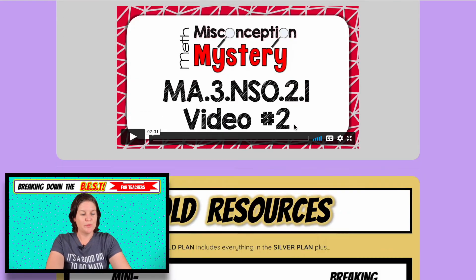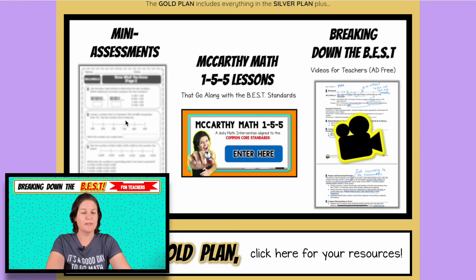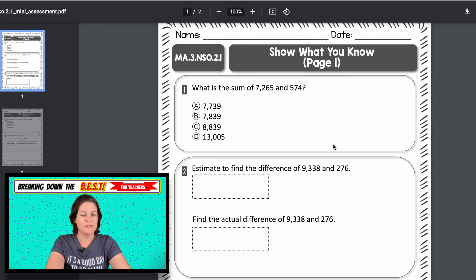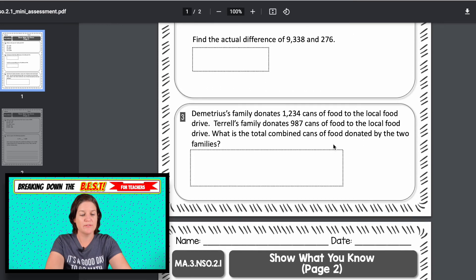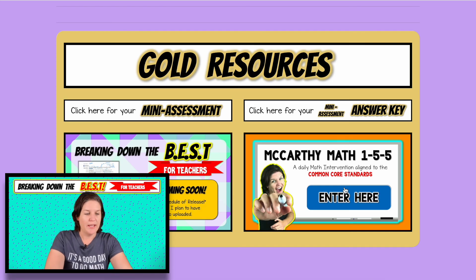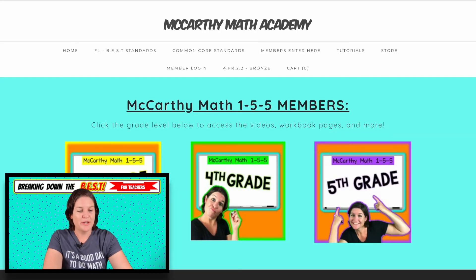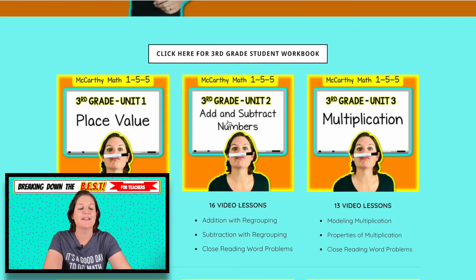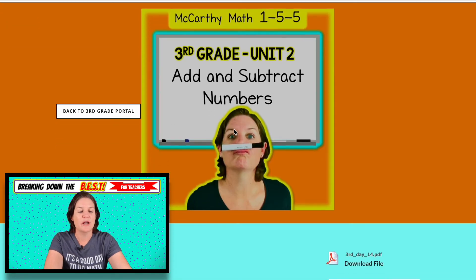All right. And if you have access to the gold membership, you also have a mini assessment at your hands. McCarthy Math 155 lessons. And of course, this video ad free. So here's a copy of the mini assessment, different types of problems. Just a quick check to see if the students got it. Multi select problem. Here's one where they got an error analysis problem. I'm not going to show you the answer key, but it's right there if you want to see it and breaking down the best that's this video. So by the time you see it, there'll actually be a video there for you to click on, which is probably what you're watching right now.